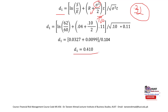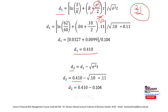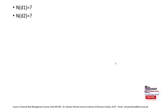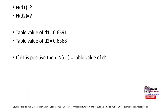We cannot interpret d1 alone — we need to find d2. d2 equals d1 minus the square root of sigma squared times T. d1 is 0.410 from the previous step. Solving this, we get d2 as 0.305. Compared to the previous question, the differences are: T was given in days so we converted it; volatility was given as standard deviation rather than variance so we squared it. One more difference is that in the previous question we had negative d1 and negative d2, but in this case we have positive d1 and positive d2.